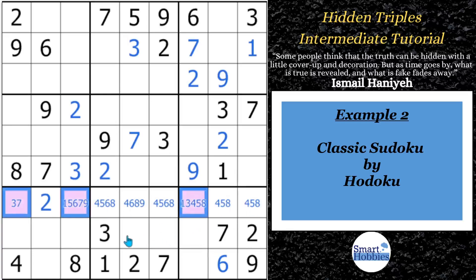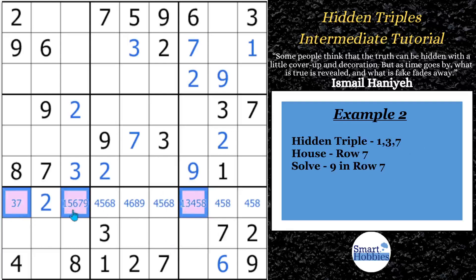what you'll notice is if you're looking for where the 1s can be, they're restricted to one of these purple cells in row 7. If you look at where a 3 can be, it's also restricted to two of these cells in row 7, two of the purple cells. And then if you look into where a 7 can be, it's restricted to these two cells, which are in the purple in row 7. So the 1, 3, and the 7 form a hidden triple.